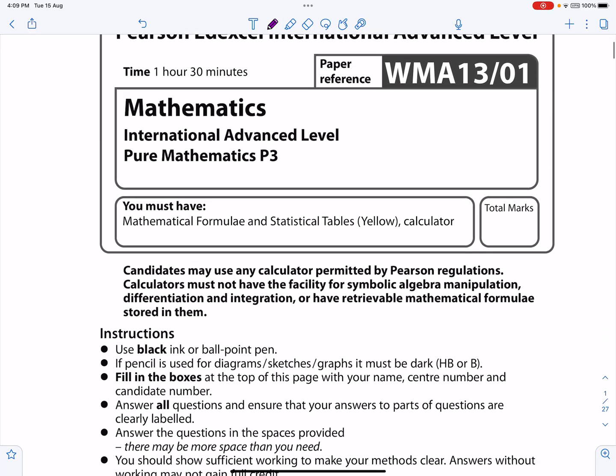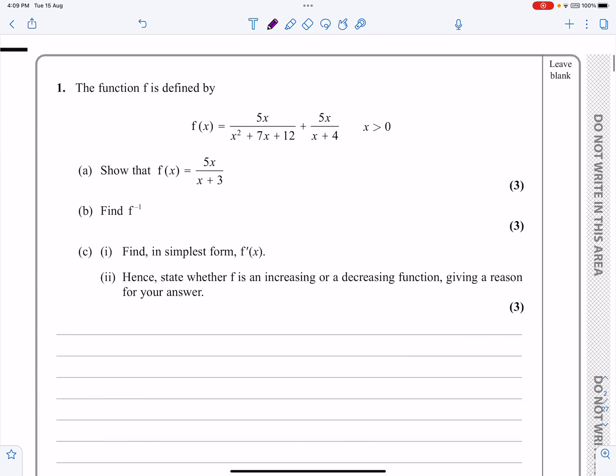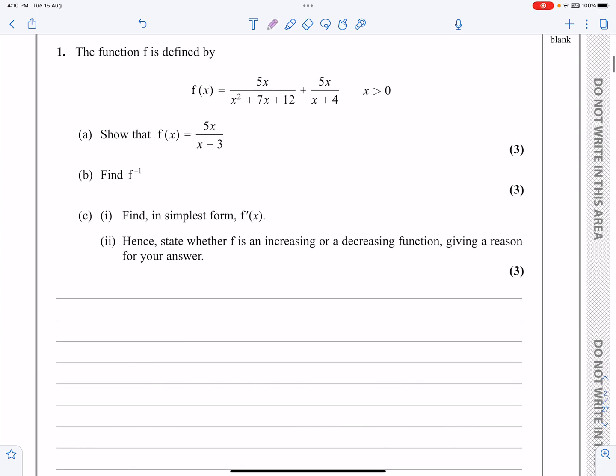Okay, this is the P3 paper from October 2021. We're going to be looking at question number one here. Question number one is an algebraic methods question. We're going to be doing some work on algebraic fractions to simplify f(x) down. We're going to be doing some work on functions and graphs because we need to find the inverse function. And finally, we're going to finish off with some differentiation, differentiating a quotient. Lots of different bits to this question. So let's make a start.